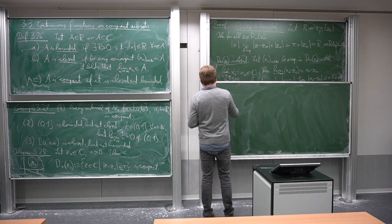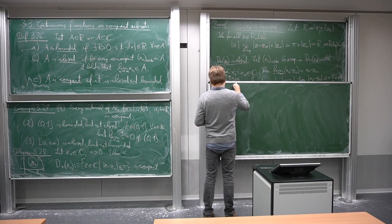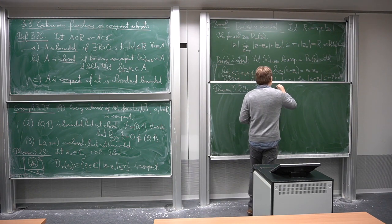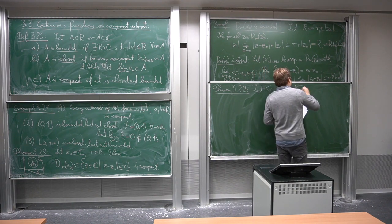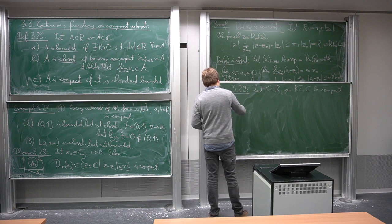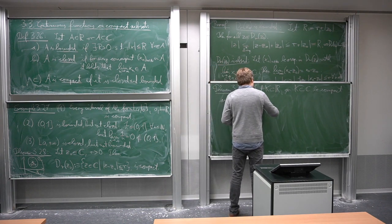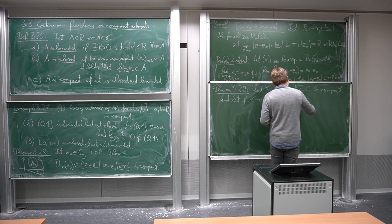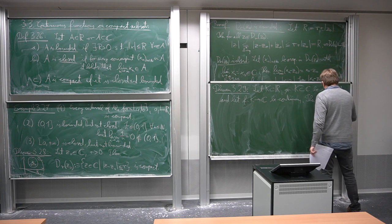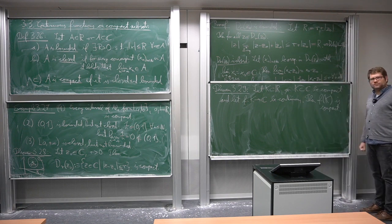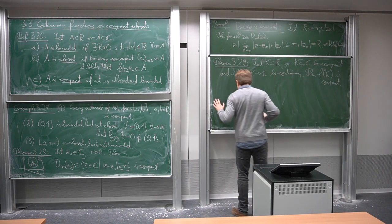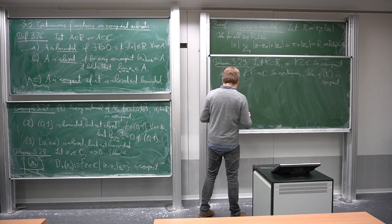The first property of compact sets we study concerns continuous functions on them. Let K be a compact subset of R or C, and let f from K to C be continuous. Then the image f(K) is compact. This does not look very spectacular, but it is very helpful and we will draw an interesting consequence from it.